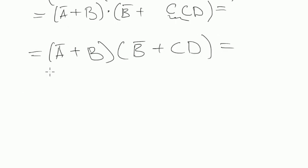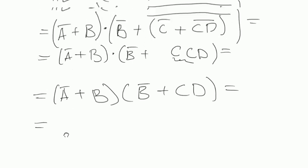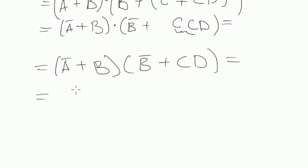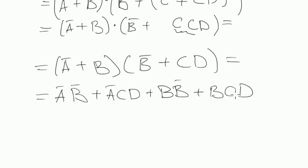A plus B multiplied by B negated plus CD. And now let's open the bracket. It's not going to be any more De Morgan's theorem to apply here, but anyway let's finish it. Multiply A negated by B negated, plus A negated by CD, plus B, plus BCD.